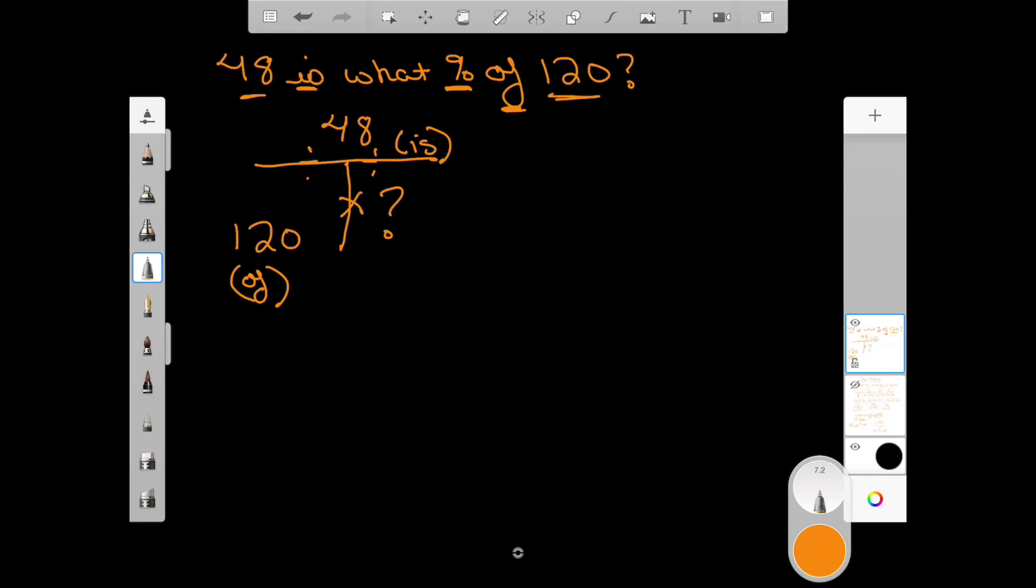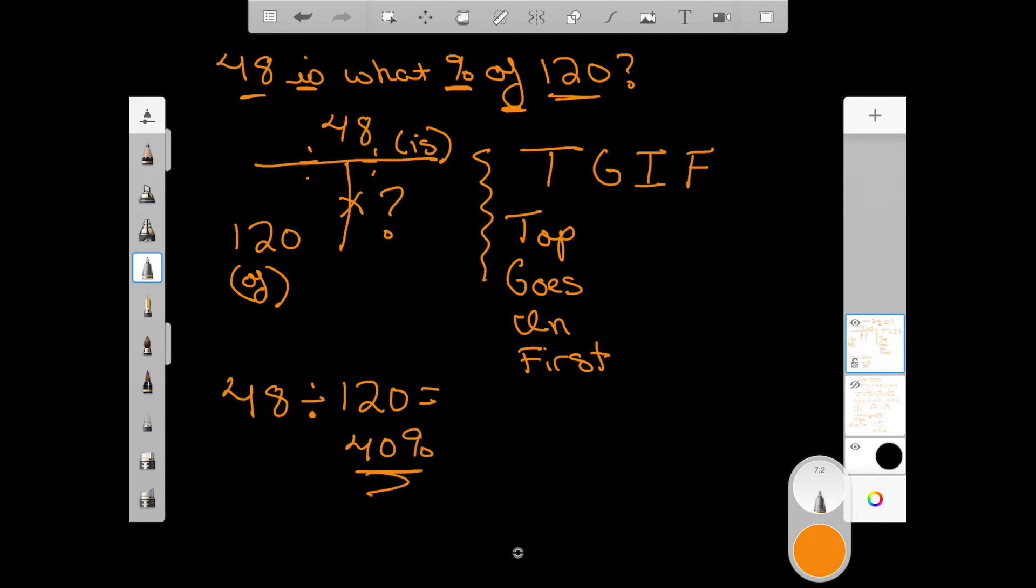We've got a top and bottom. Now I've told you before if you've got a top and bottom you're going to divide, but I want you to remember a little phrase, TGIF, and that doesn't stand for thank goodness it's Friday. This time it's going to stand for top goes in first. So what I mean is in your calculator you're literally going to put 48, the divided sign, 120, and that's going to give you an answer of 40 percent.